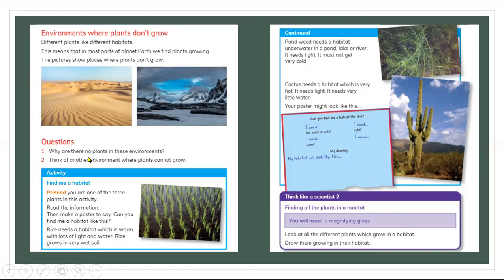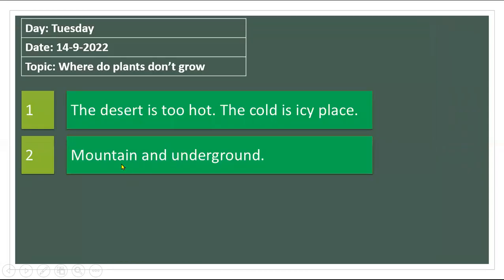Now think of other environments where plants cannot grow. The mountain and underground — beneath the earth — the plants cannot grow. Because on mountains there is not much water, and underground there is no sunlight for plants. So on mountains and underground, the plants cannot grow.